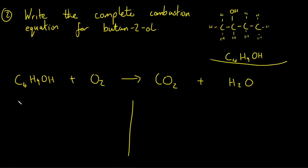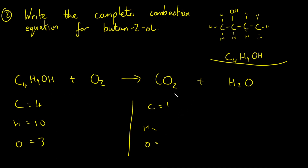Following the same steps — balance carbons, hydrogens, then oxygens. Left-hand side: four carbons, ten hydrogens (nine plus one from OH), and three oxygens (one from OH plus two from O2). Right-hand side: one carbon, two hydrogens, and three oxygens. So I place a 4 in front of CO2, giving four carbons on both sides — carbons balanced.